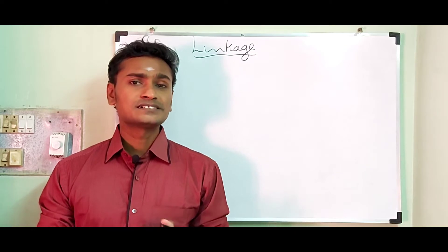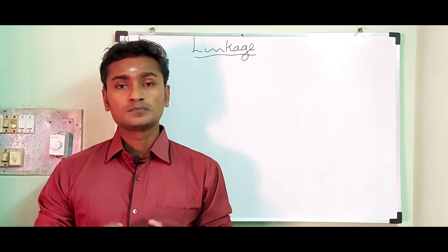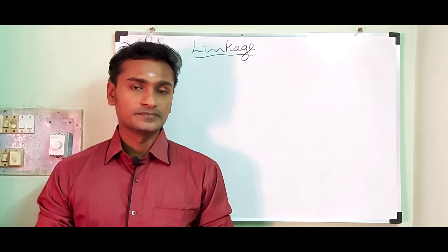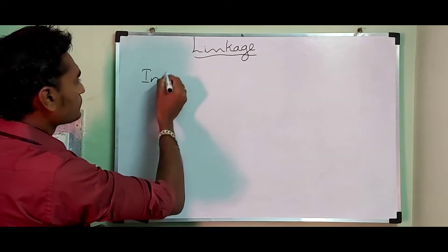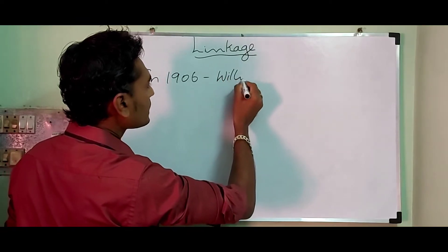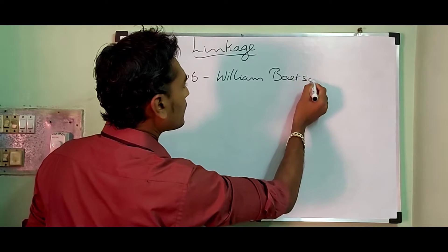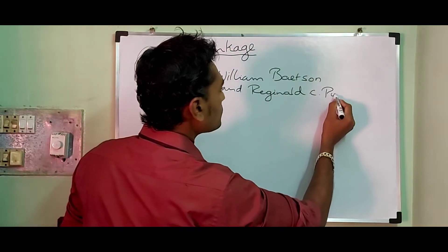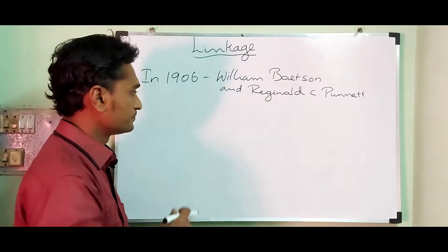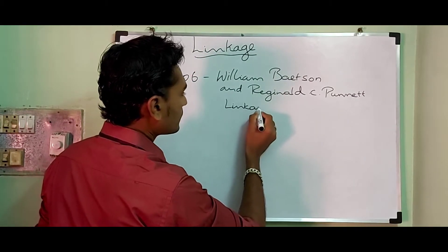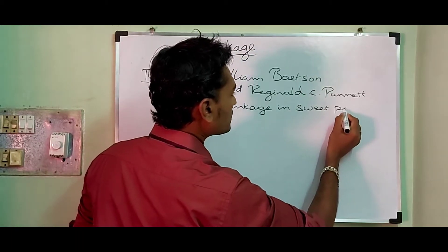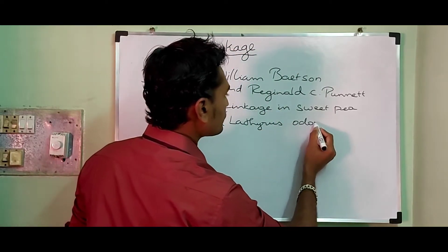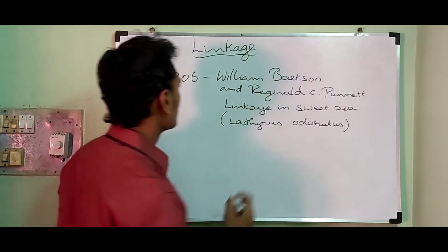In 1906, William Bateson and Reginald C. Punnett observed in sweet pea — scientific name Lathyrus odoratus — that two pairs of alleles do not assort independently. They observed linkage in sweet pea.